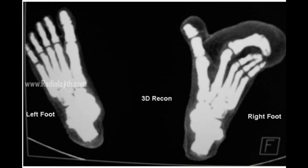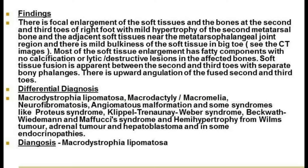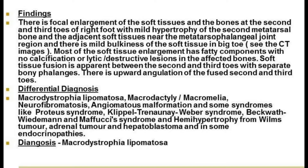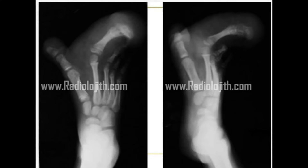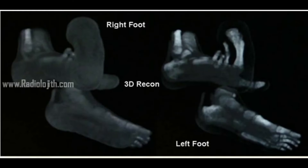The findings are: there is focal enlargement of the soft tissues and bones at the second and third toes of the right foot, with mild hypertrophy of the second metatarsal bone and adjacent soft tissues near the metatarsophalangeal joint. There is mild bulkiness of the soft tissues in the big toe. Most of the soft tissue enlargement has fatty components with no calcification or any lytic or destructive changes in the affected bones. Soft tissue fusion is apparent between the second and third toes with separate bony phalanges, and there is upward angulation of the fused second and third toes.